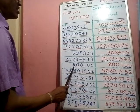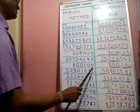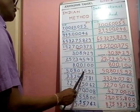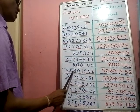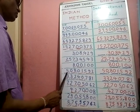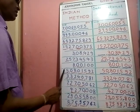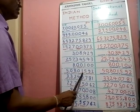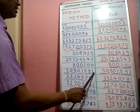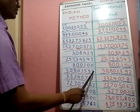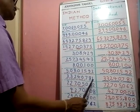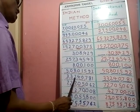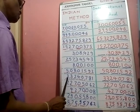Next one — ones, tens, hundreds, thousands, ten thousands, lakhs, ten lakhs, crores. We read: five crore eight lakh one thousand five hundred ninety-two. Next one — ones, tens, hundreds, thousands, ten thousands, lakhs, ten lakhs, crores.